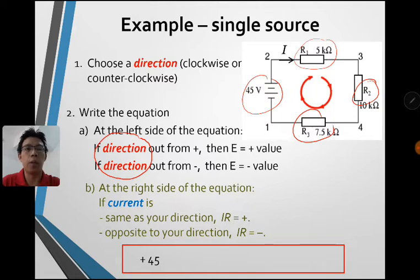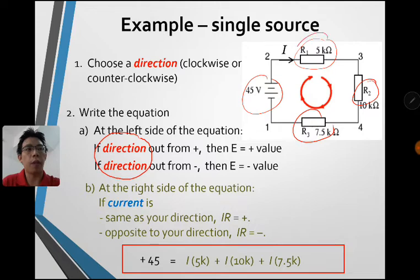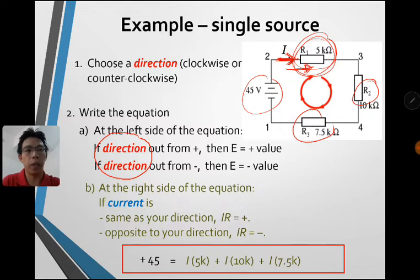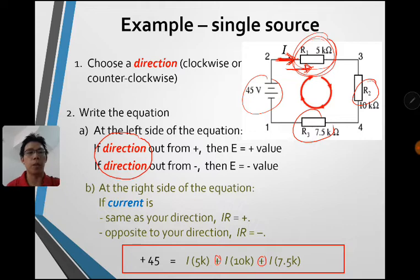On the right-hand side we have the potential difference, which is current times resistance. Usually you won't be given the PD because you want to find the current or some resistance. So we have I times 5kΩ — this is positive because the current is the same as our assumed direction. Likewise for the 10kΩ and 7.5kΩ resistors, all values are positive because they match our assumption. So we have 45 equals I times the sum of all resistances.